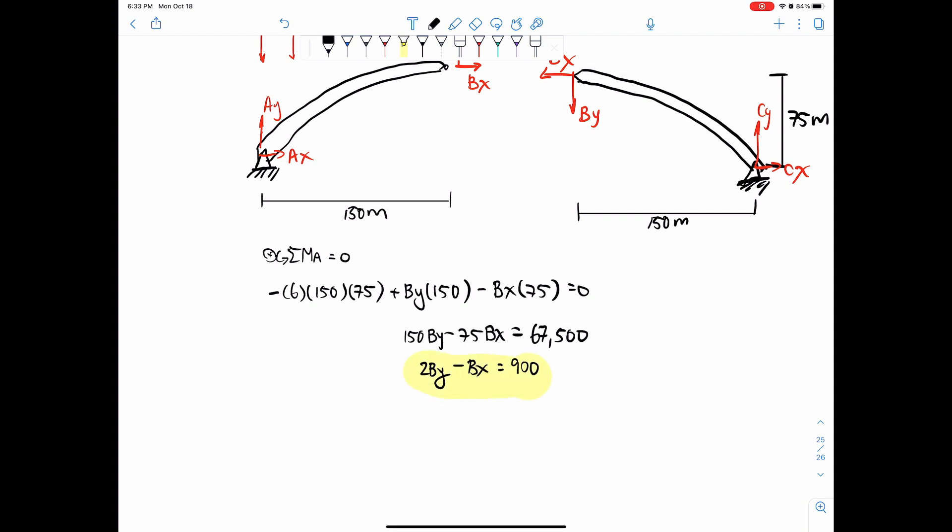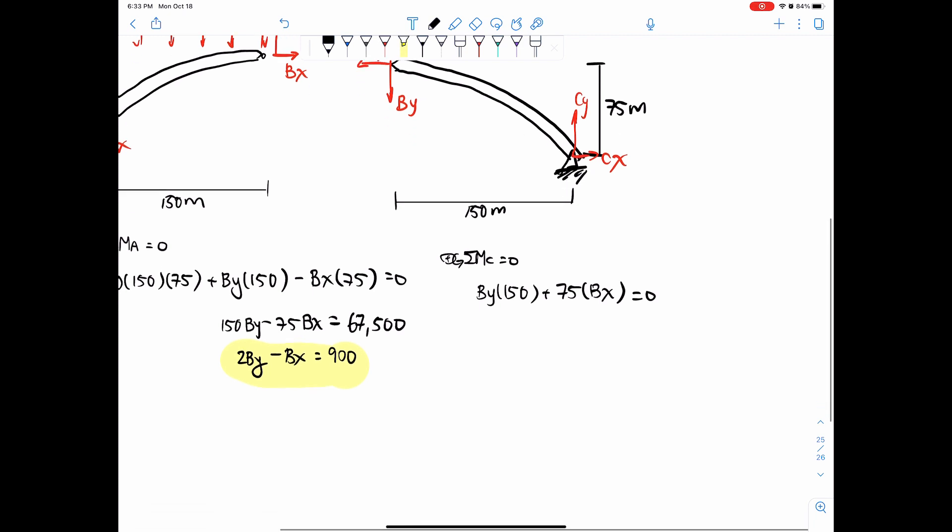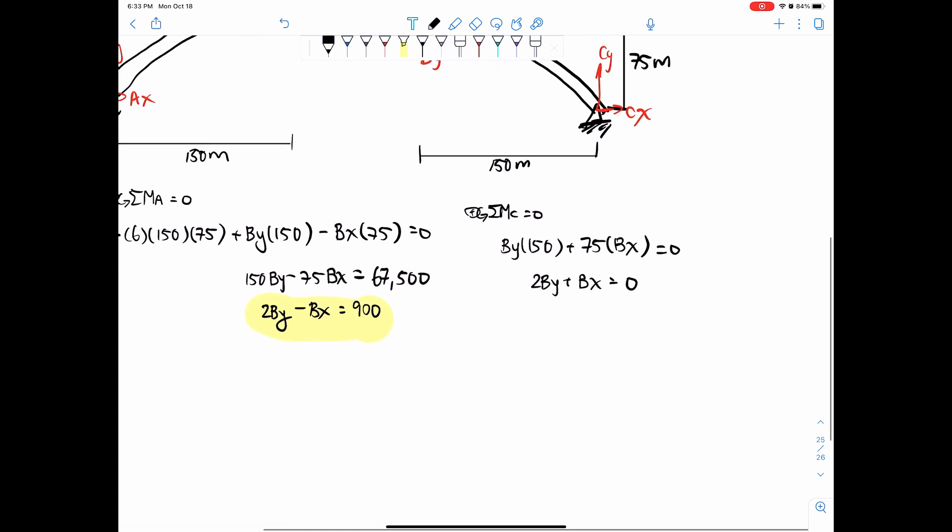And we don't have enough to solve this right now, but we can move to the other side. We can take a sum of moments around point C and do the exact same thing. So first thing is BY. It wants to spin it counterclockwise, so that's positive BY times 150, and then BX also wants to spin it counterclockwise. So that's 75 times BX, and that's all of the forces there, so we set that equal to zero, and we can just say that 2BY plus BX equals 0. And those are your two equations.